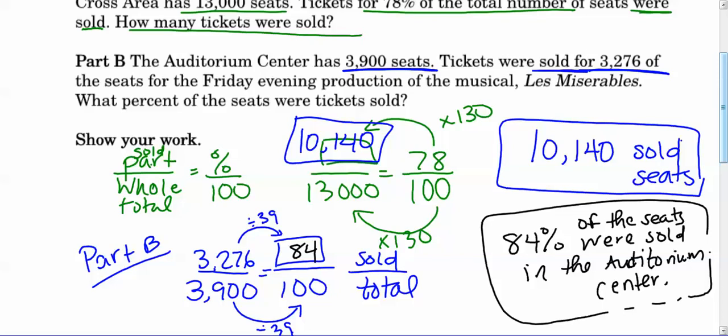All right. Part B. This says the auditorium center has 3,900 seats and tickets are sold for 3,276 of the seats. So again, good turnout, right? We've got, that seems like a pretty high percentage, right? If you've got almost all the seats sold. So people are going to watch, and it says what percent of the tickets were, were tickets sold? So we're finding a percent sold essentially. So that should have been underlined. What percent of the tickets are sold?